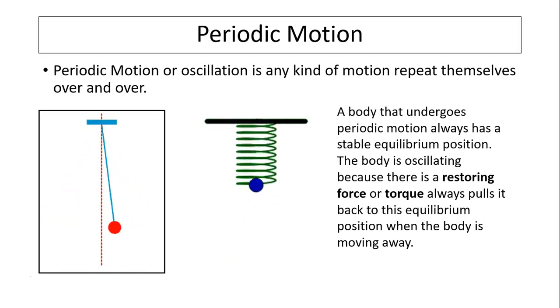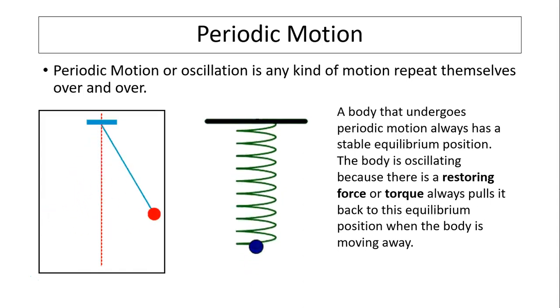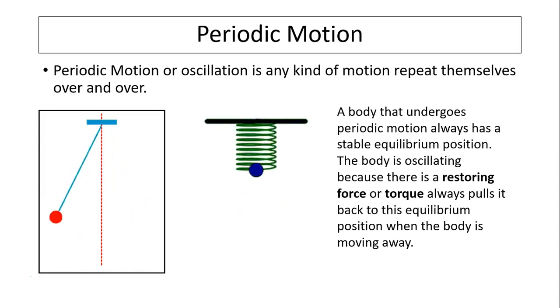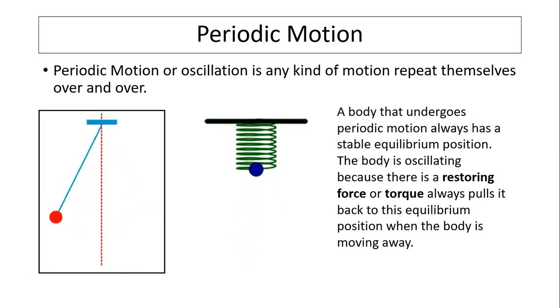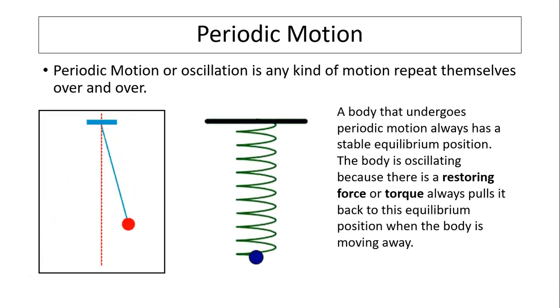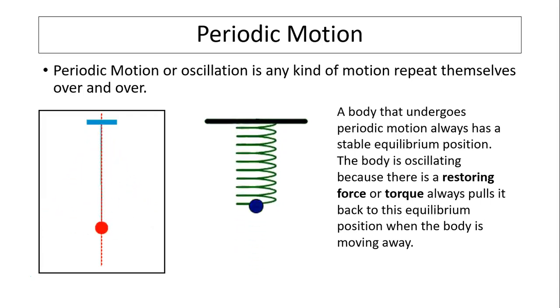A body that undergoes periodic motion always has a stable equilibrium position. The body is oscillating because there is a restoring force or torque always pulling it back to its equilibrium position when the body is moving away.